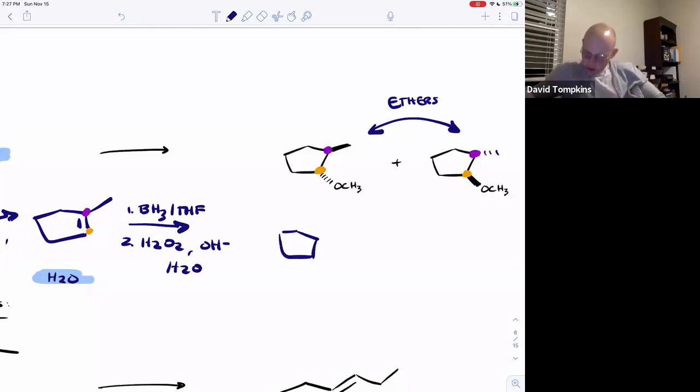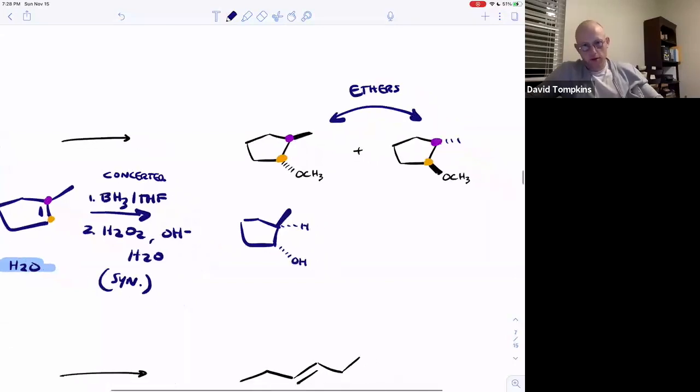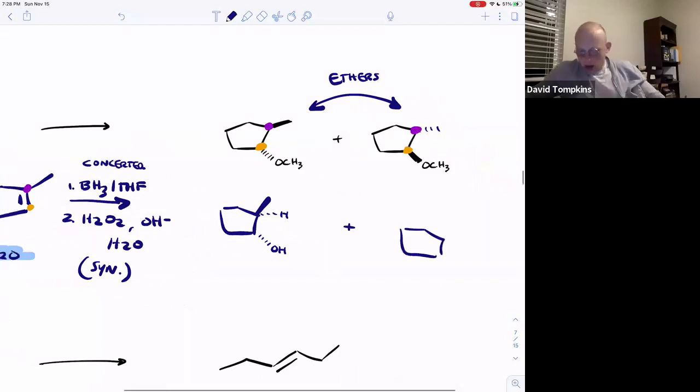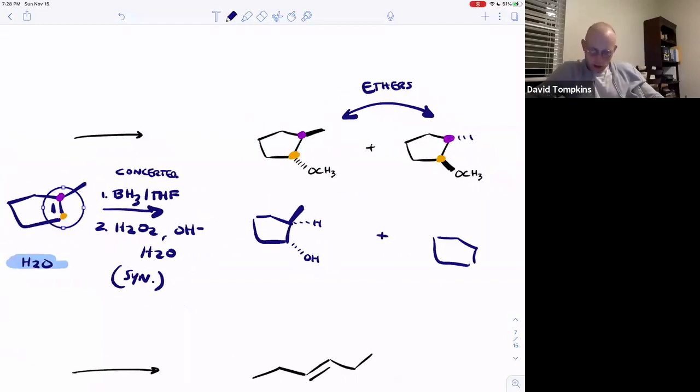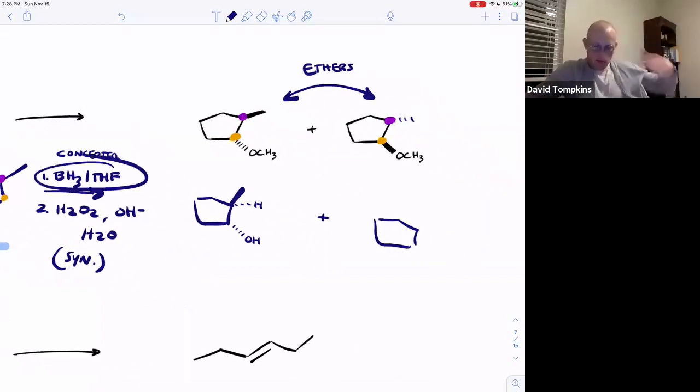And remember that this is a syn addition, because the mechanism of borane with an alkene is concerted. So, when boron and hydrogen add, they add syn, and it turns out the OH and the H will also be syn. Which means that the methyl group gets pushed forward if the alcohol adds from the back. The alkene is planar though, so at this point, we can attack with boron from the top or the bottom of the alkene.